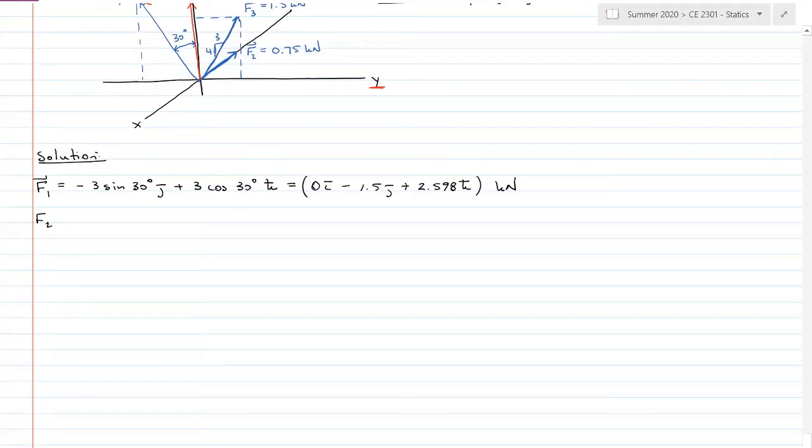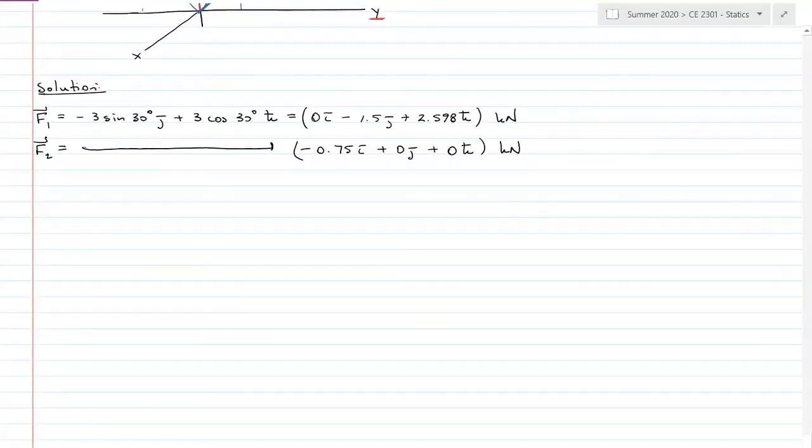Bear with me and you'll see my train of thought. Force 2 acts entirely in the negative x direction, so I'll skip the math part and go straight to negative 0.75 i plus 0 j plus 0 k kilonewtons. We're lining up everybody by letter. As you get more comfortable with Cartesian format, the placeholders won't be necessary, but I'm using them for now.